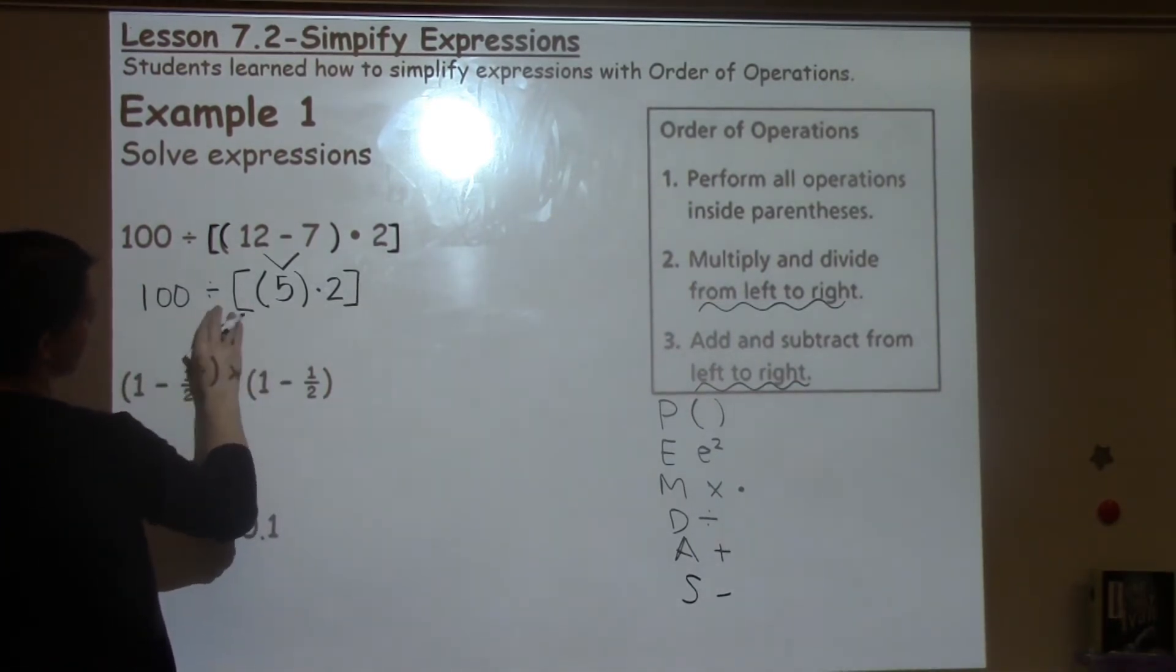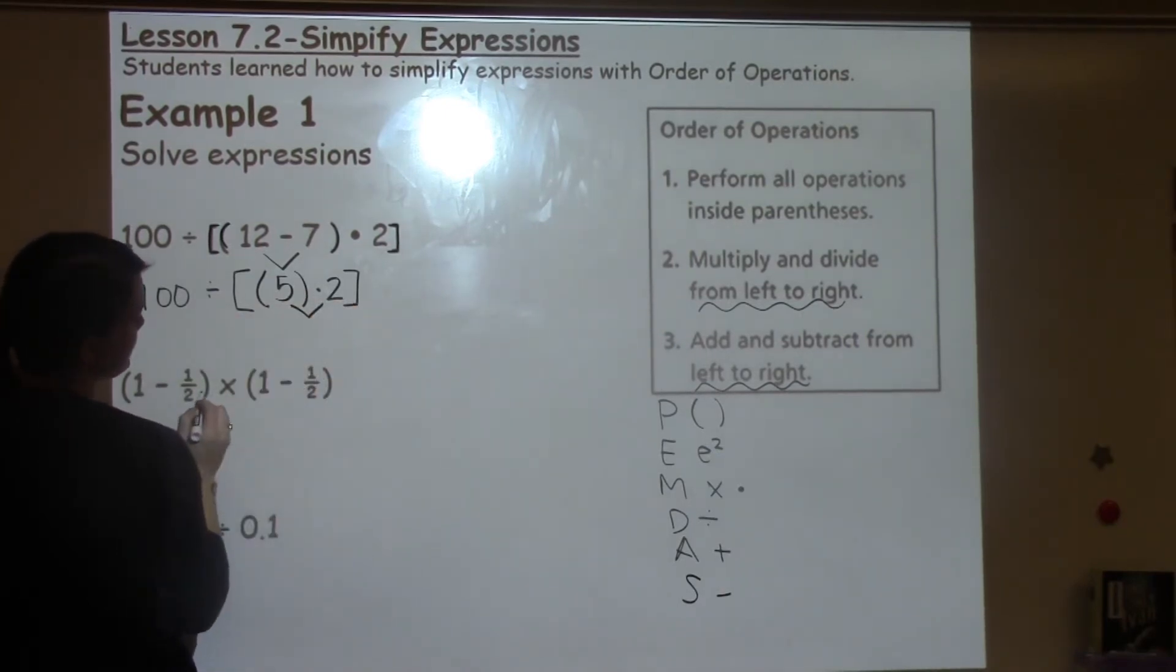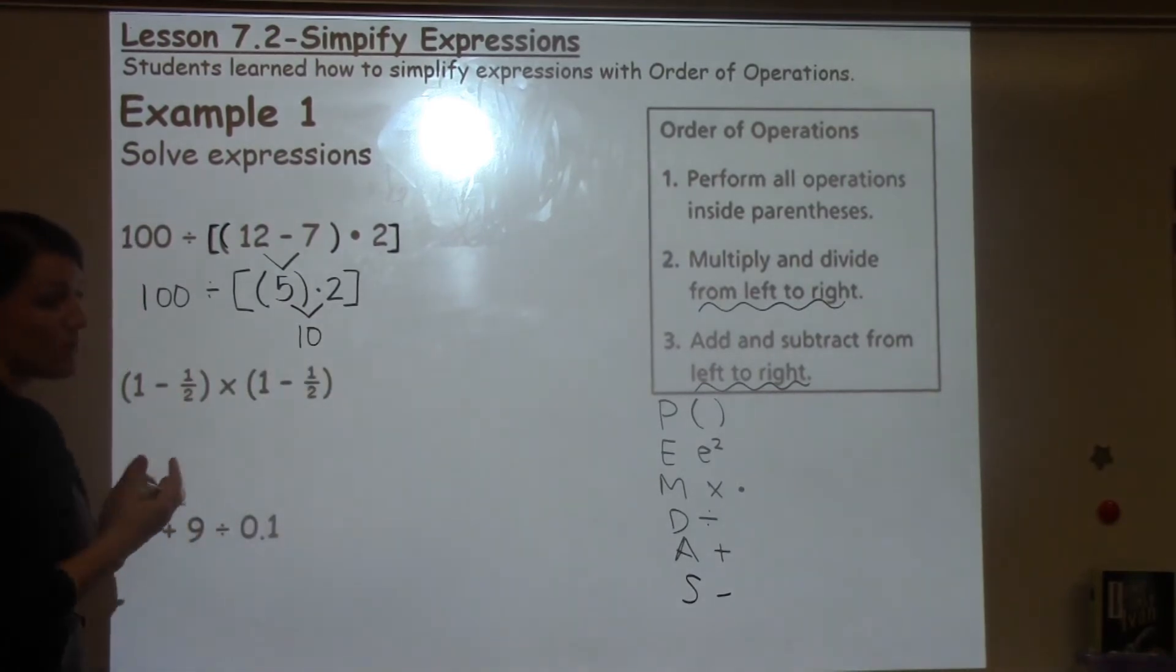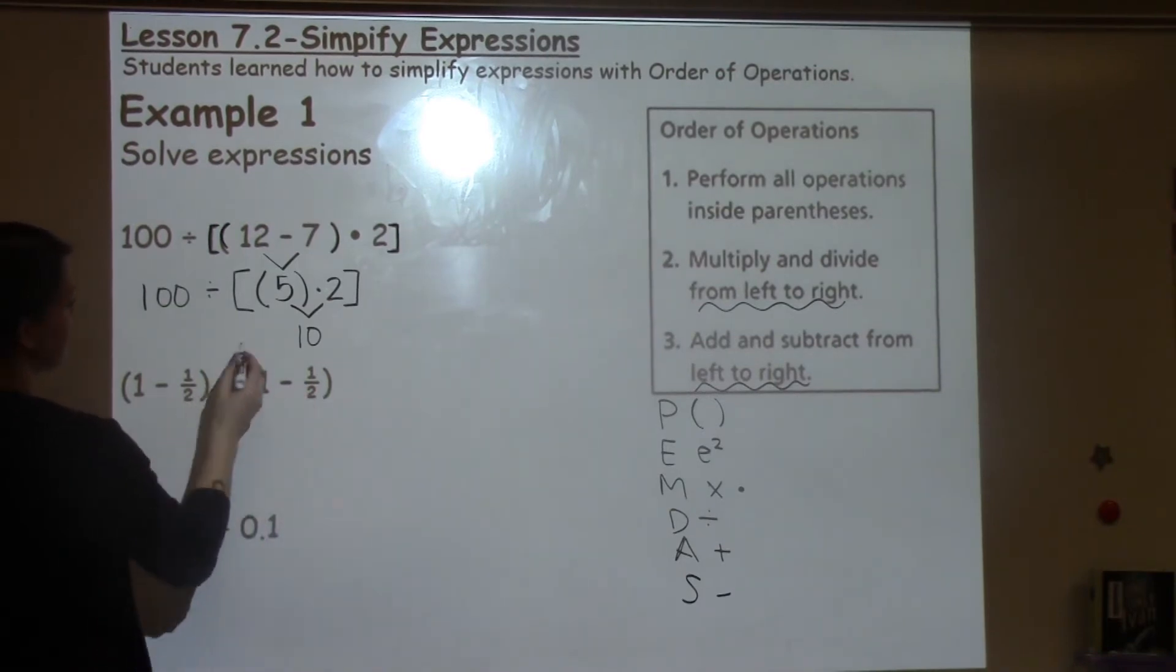So now I'm working with division and I have parentheses and brackets. So I'm going to do this first. 5 times 2 is 10. Now there's only one number left in those parentheses and brackets so I don't have to include them anymore. And then I just have my 100 divided by 10.